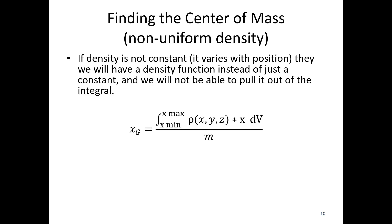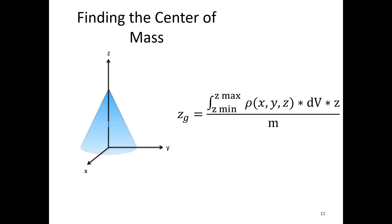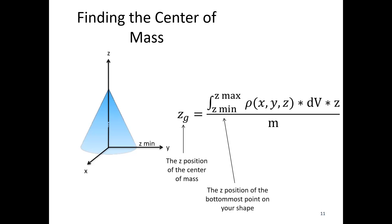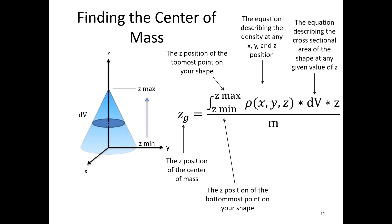And rather than the volume being on the bottom of this fraction, I'm going to have the mass on the bottom. The density function can get complicated — it can vary with any direction, all three directions, or just a single direction, giving a gradient of densities. So zG is the position of the center of mass in the z direction, going from min to max z values, with the density function describing density at any x, y, and z position, dV as the equation describing the cross-sectional area, and total mass of the object in the denominator.